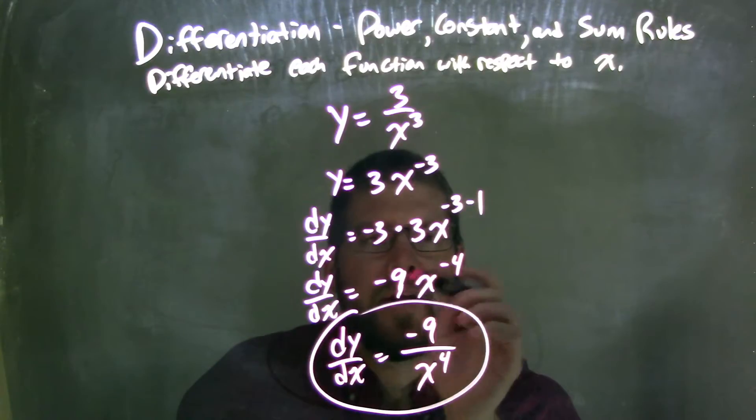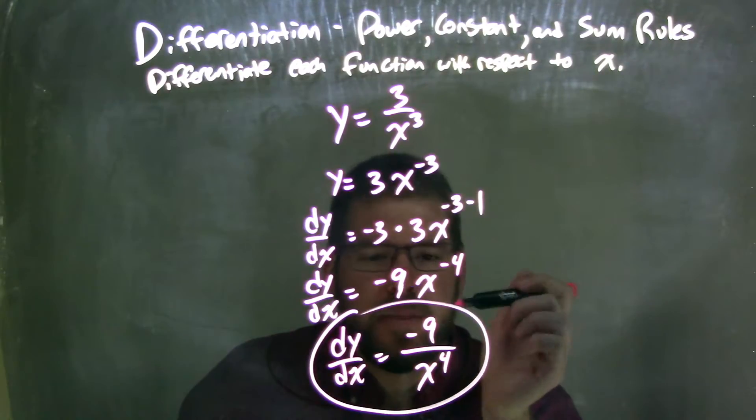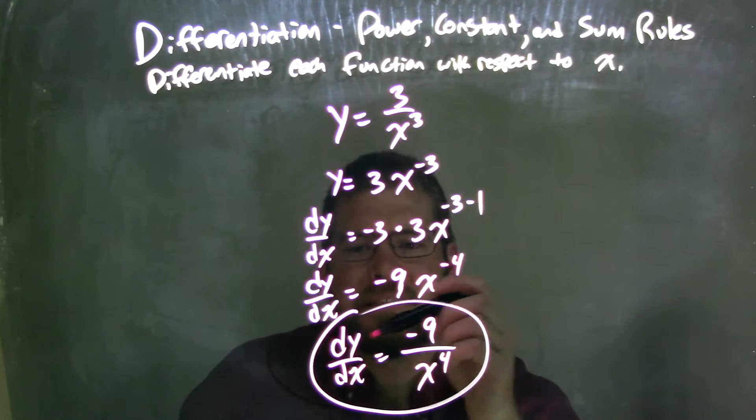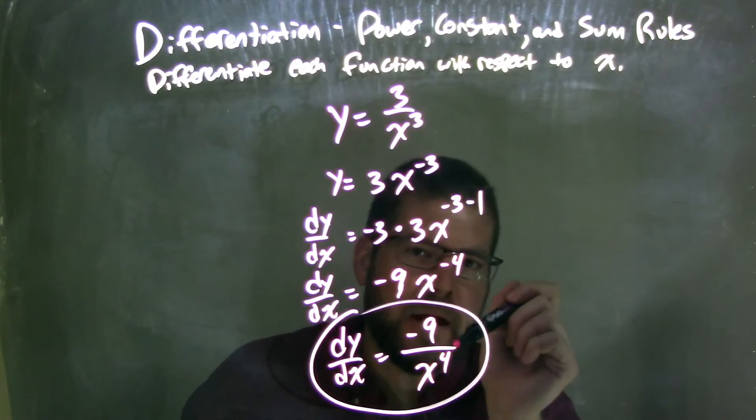I simplified, negative 3 times 3 was negative 9. Negative 3 minus 1 is negative 4. So now I bring that exponent back down with the variable. So in doing so, I get my final answer, which is dy/dx is equal to negative 9 over x to the positive 4th power.